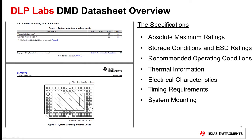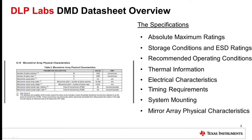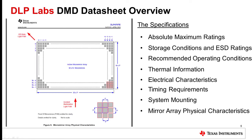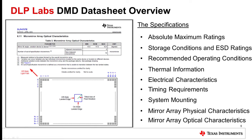The last two sections in the specification portion of the datasheet are the micromirror array physical and optical characteristics. The array physical characteristics contains a table showing the numbers and sizes for the active mirrors in the entire array, along with a diagram showing the array layout with the direction of incoming light and off-state light path indicated. The array optical characteristics shows the nominal tilt for each mirror and another diagram showing the light paths, followed by descriptions of the window characteristics.